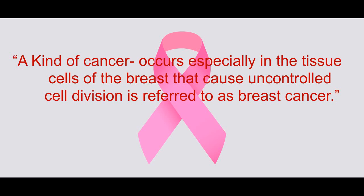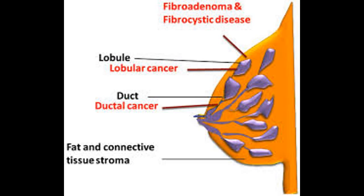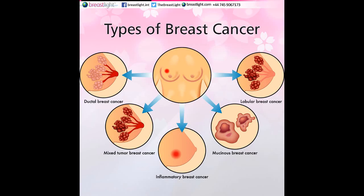What is breast cancer? A kind of cancer that occurs especially in the tissues or cells of the breast, causing uncontrolled cell division, is referred to as breast cancer. There are three parts of a breast: connective tissues, ducts, and lobules. Connective tissues make the structure of the breast and hold the ducts and lobule parts — a type of fatty and fibrous tissue. The glands or lobules secrete milk, while the ducts carry it to the nipple.